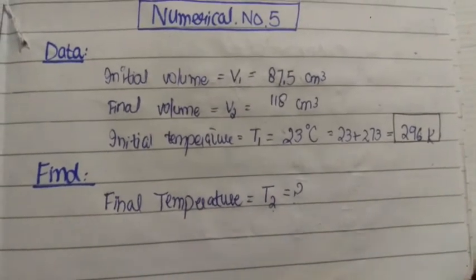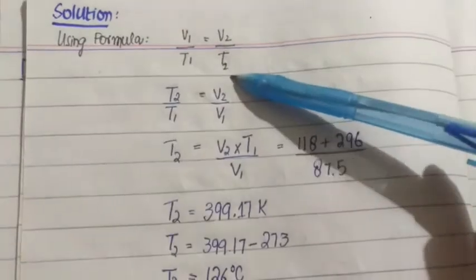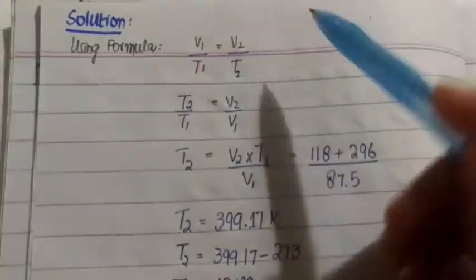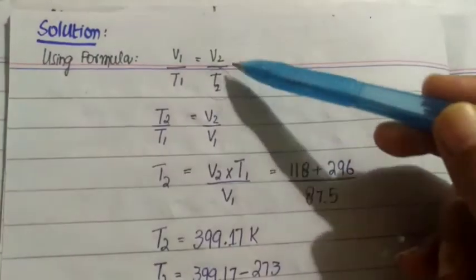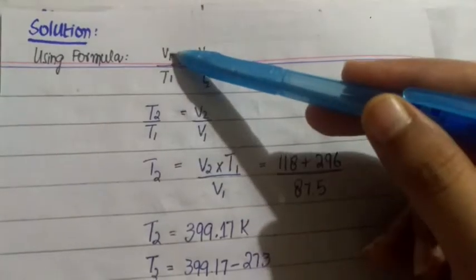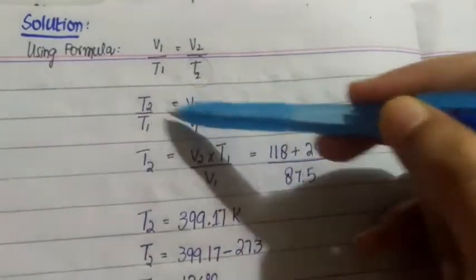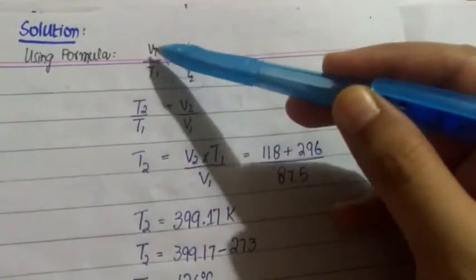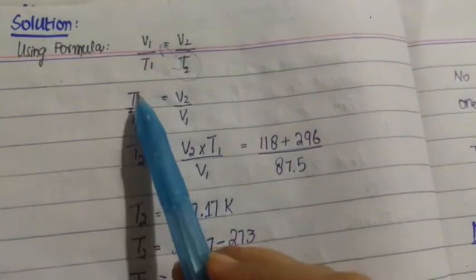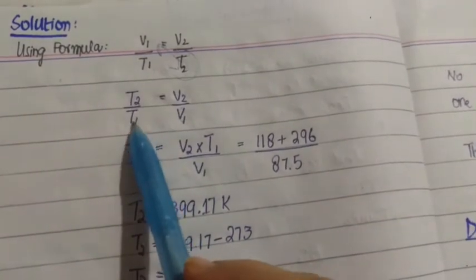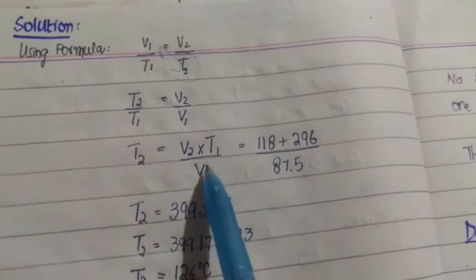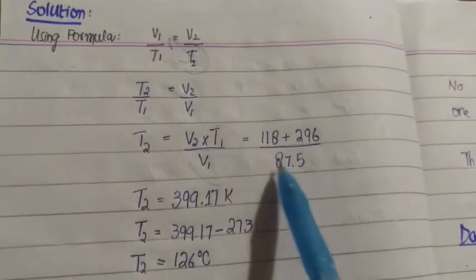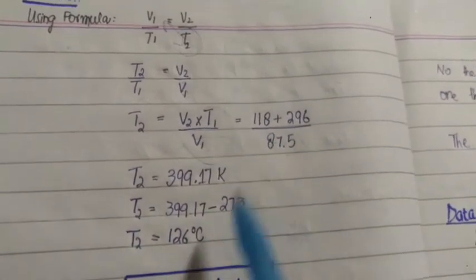So first we will write the data. Initial volume v1 is 87.5 cm³, final volume v2 is 118 cm³, initial temperature t1 is 23 degree centigrade, which converts to 296 Kelvin. We need to find final temperature t2. For this, we will use Charles's law formula: v1 over t1 equals v2 over t2. Here we need to find t2, so we shift t2 to this side and v1 to that side. We changed the places of these two values, v2 and t1 stay as is. The final expression we get is: t2 equals v2 multiplied by t1 divided by v1.